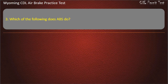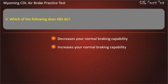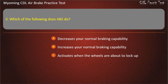Question 3. Which of the following does ABS do? Decreases your normal braking capability. Increases your normal braking capability. Activates when the wheels are about to lock up. Shortens your stopping distance. Answer: Activates when the wheels are about to lock up.